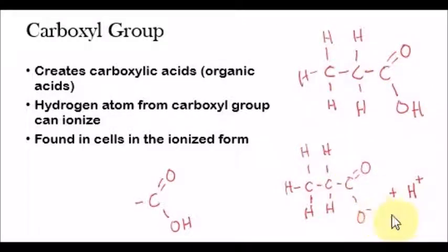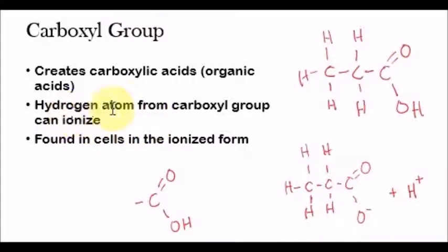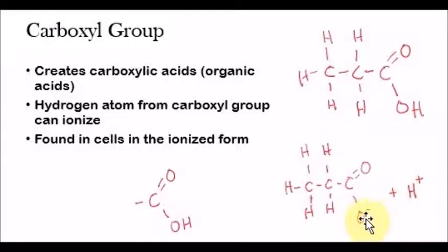The hydrogen atom can be released from the OH within the carboxyl group, leaving the oxygen atom with a negative charge. That released hydrogen atom can go and bond to water to create hydronium — increasing the concentration of hydronium in water, which is why this is called an acid. An organic acid is whenever we have a carboxyl group. Additionally, whenever you find a carboxyl group in a cell, it's in the ionized form — with the hydrogen already ionized and the oxygen atom having a negative charge — not in the non-ionized form.